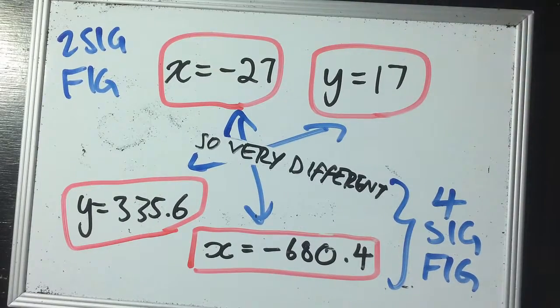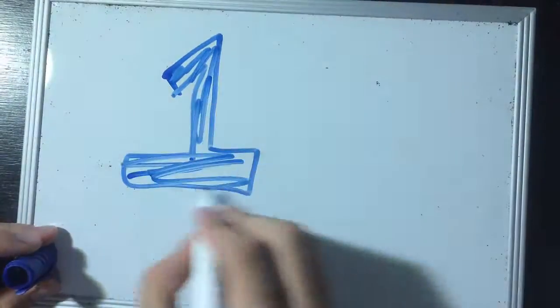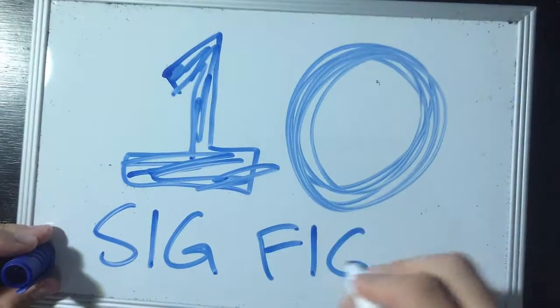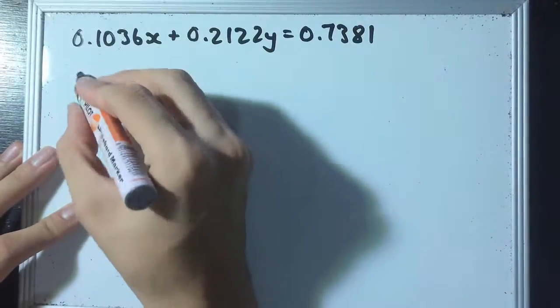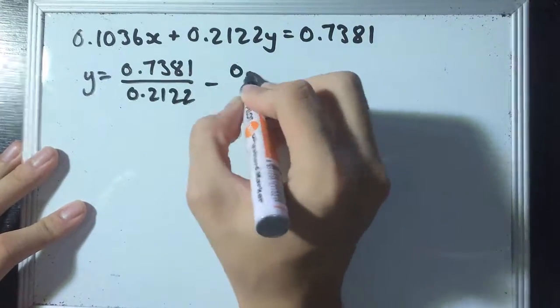But instead, what happens if this time we use ten significant figures instead for any intermediate answers? Well, let's try it. Using the same pair of simultaneous equations, we can take the first equation, rearrange it so that y is the subject,